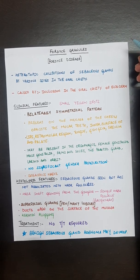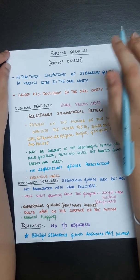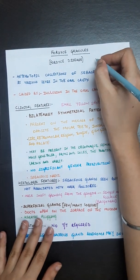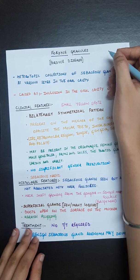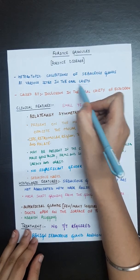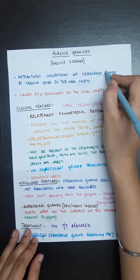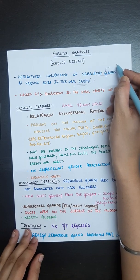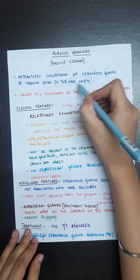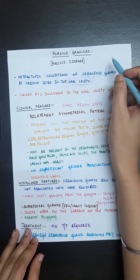Today we are going to discuss Fordyce Granules, which is also known as Fordyce Disease. This is basically not a disease but we call it Fordyce Disease. It is a developmental disorder — a heterotopic collection of sebaceous glands at various sites in the oral cavity. Heterotopic means abnormally present. Sebaceous glands are the oil-producing glands present in our skin, but when present inside the oral cavity, that is basically abnormal.